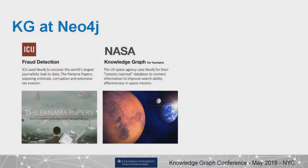Just one quick word on Neo4j — I'm not going to talk about Neo4j too much today. My colleague Nav did a great job yesterday. You've probably heard about some of our most popular projects, in particular the Panama Papers. The ICIJ — this group of investigative journalists — used Neo4j to uncover corruption and wrongdoing based on a leak from Mossack Fonseca in Panama, which got them the Pulitzer Prize.